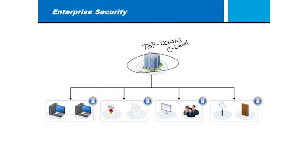Depending on the types of jobs we work with, some of us might be focused on PCs and operating systems, talking about security from that aspect — things like antivirus software, host-based intrusion detection systems, and securing web browsing. That's only a piece of the security. There are many more things to look at, including policies like acceptable use types of policies.